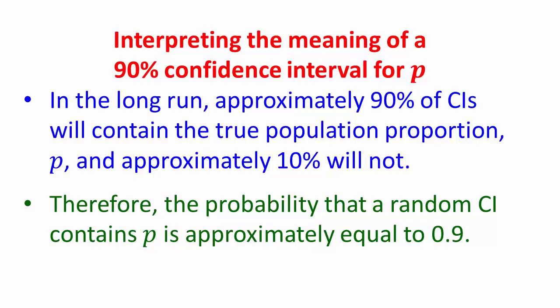If we were to do this many, many times, what we would find is that in the long run, approximately 90 percent of confidence intervals will contain the true population proportion p, and approximately 10 percent will not. Therefore, the probability that a random confidence interval contains p is approximately 0.9. That's what we saw in the simulation.